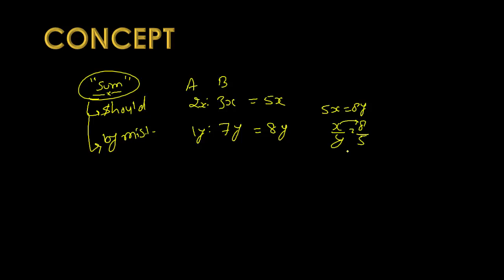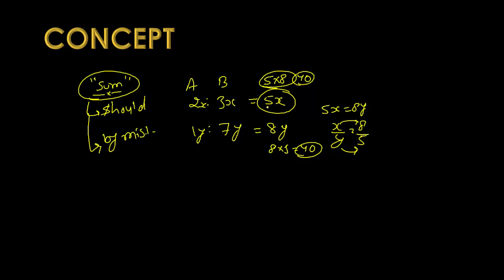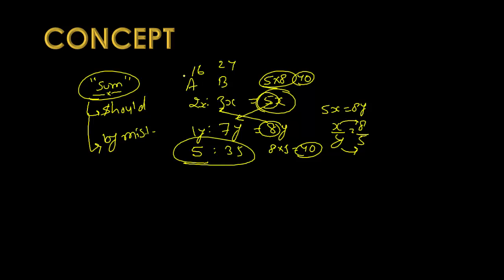We take x=8, y=5, so 5×8 = 8×5 = 40, meaning the merged total is 40. To merge the ratios, we multiply 8 (the mistake denominator) into the should ratio: 2×8=16, 3×8=24. We multiply 5 (the should denominator) into the mistake ratio: 1×5=5, 7×5=35. This makes both totals equal since the sum is a constant.